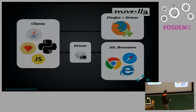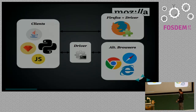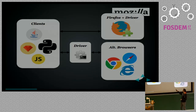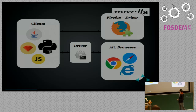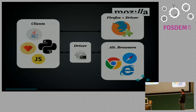An overview of how it works: you have your clients — Java, Python, JavaScript — which talk to a driver. In the majority of browsers, this driver is a binary running on the system, responsible for launching the browser and forwarding commands to it, and the browser then carries out those interactions. For Firefox, it's been a little different — it's actually one of the earlier drivers, and it was built as a Firefox extension, which is why we have the separation.